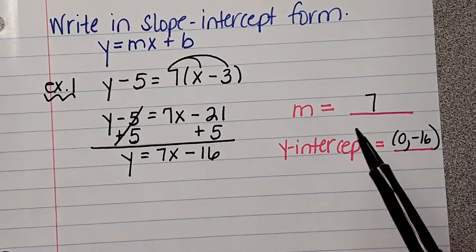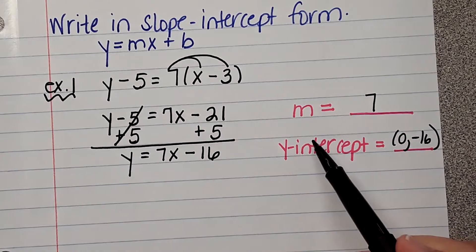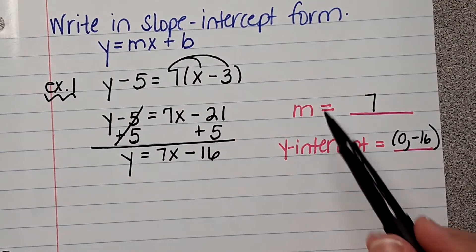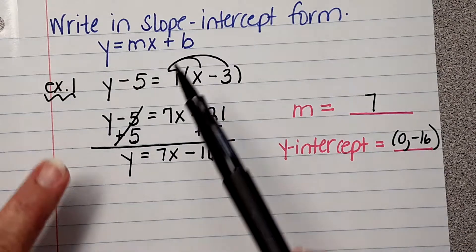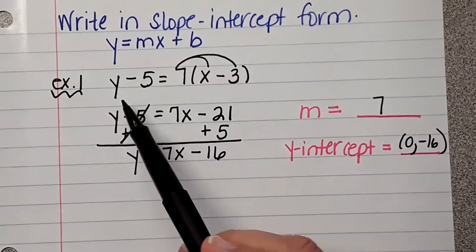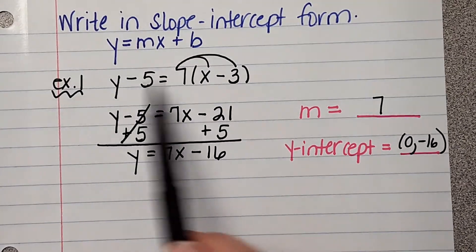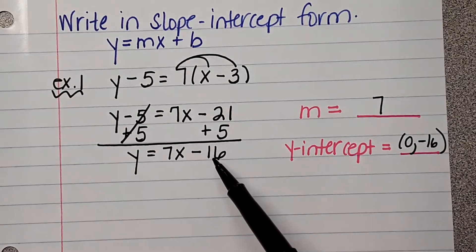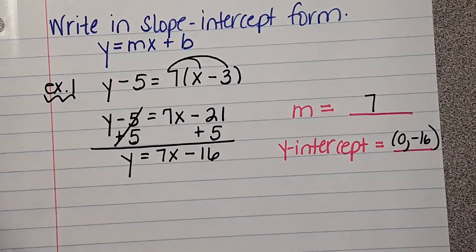Now, this doesn't, it doesn't, this isn't always going to happen, but I always like to ask you those questions just to see if you can do it. So, what we're going to do next is slope, this is point slope, and I want you to write it in slope intercept form.